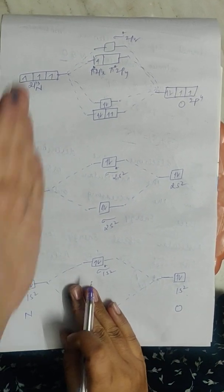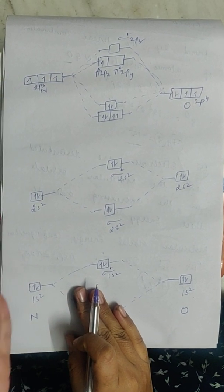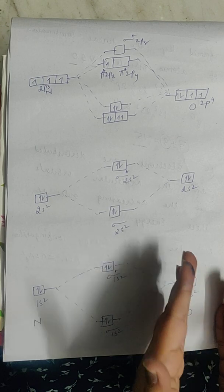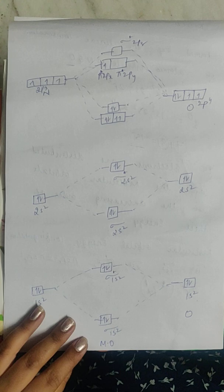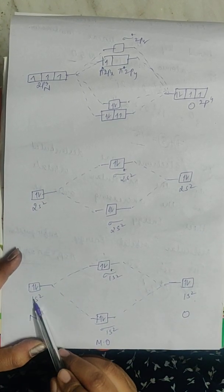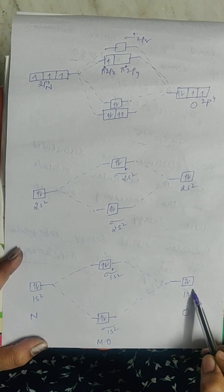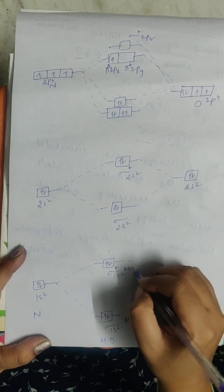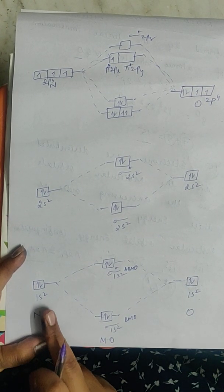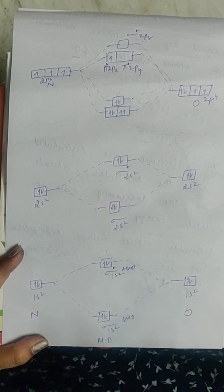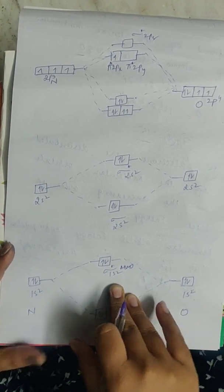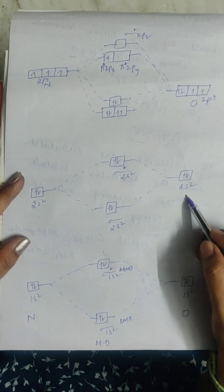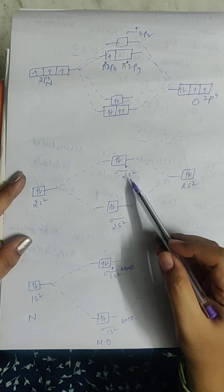Here we are writing the atomic orbitals of nitrogen with its electrons distributed in them. Here we are representing the atomic orbitals of oxygen with electrons in it, and in the middle I am representing the molecular orbitals. So 1s2 of nitrogen is combining with the 1s2 of oxygen — there are 4 electrons. These 4 electrons are distributed in the bonding molecular orbital sigma 1s2 and antibonding molecular orbital sigma star 1s2. Then we have the valence electrons at the 2s2 level: 2s2 of nitrogen is combining with 2s2 of oxygen, distributed in sigma 2s2 and sigma star 2s2.